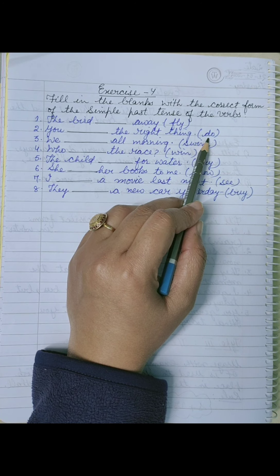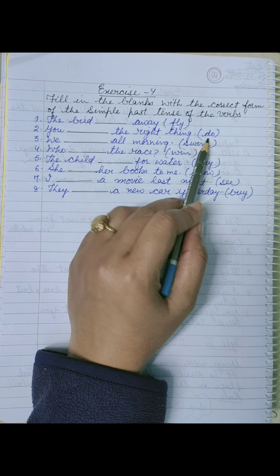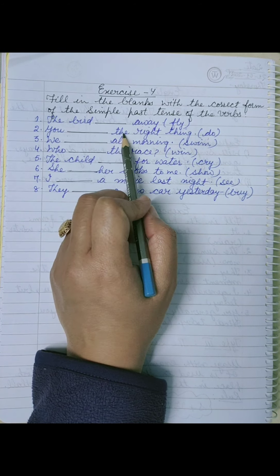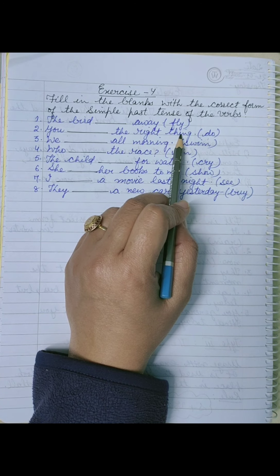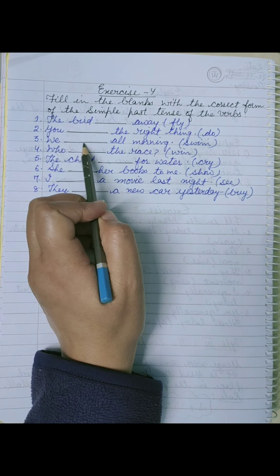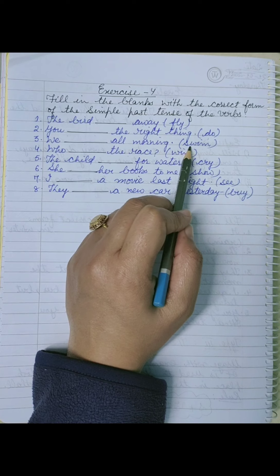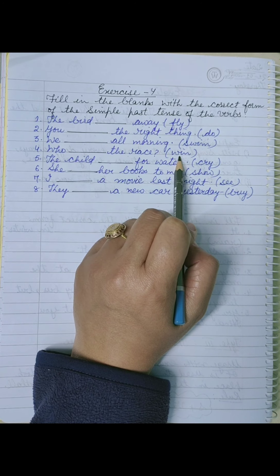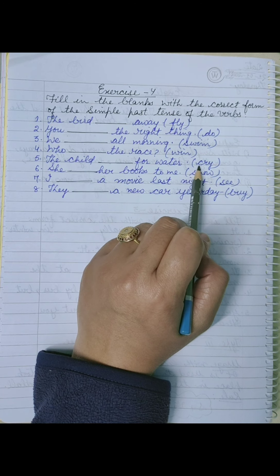So second form of do is did, and third form is done. But we will use second form in the simple past tense - you did the right thing, clear? Next, we dash all morning - we swam.